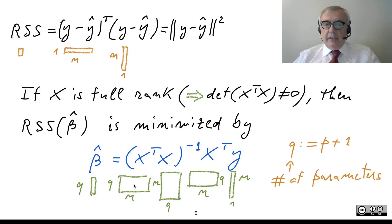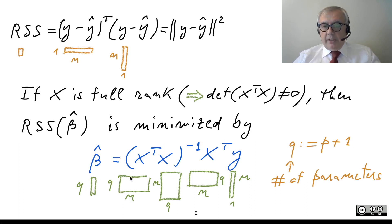You can check the dimensions: beta-hat is Q times 1, X-transpose is Q times N, and all the matrix products are possible and can be used to compute beta-hat.